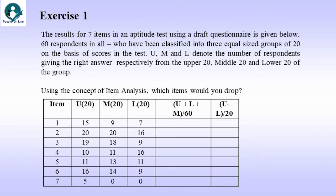Now, what is expected? Using the concept of item analysis, which items would you drop? So, here, I think the key lies in the 5th and 6th column. The 5th column is the item difficulty index, and the 6th column is the item discrimination index. So, we would keep those items which score adequately on both these counts, that is, difficulty and discrimination. Would you like to try this out? So, we have the solution in the next slide.